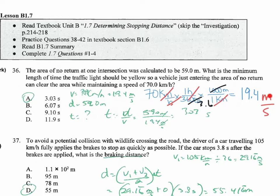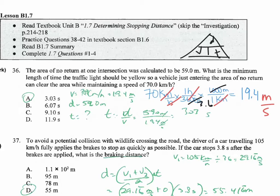Then you use that 19.4 meters per second in the formula: time equals distance divided by velocity. That's a simple rearrangement of the formula. For some of you, that's going to look more like the triangle where you've got speed, distance, and time — where velocity/speed is distance divided by time, and distance is speed times time.